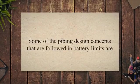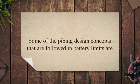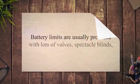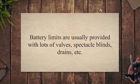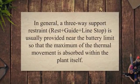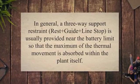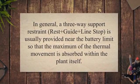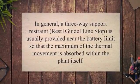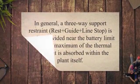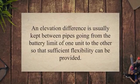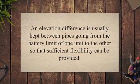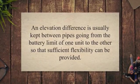Some of the piping design concepts followed at battery limits include: battery limits are usually provided with lots of valves, spectacle blinds, drains, etc. In general, a three-way support restraint — rest plus guide plus line stop — is usually provided near the battery limit so that the maximum thermal movement is absorbed within the plant itself. An elevation difference is usually maintained between pipes going from the battery limit of one unit to another so that sufficient flexibility can be provided.